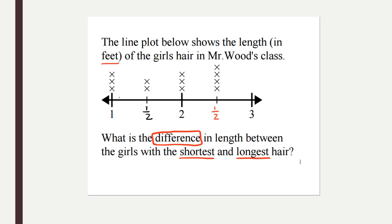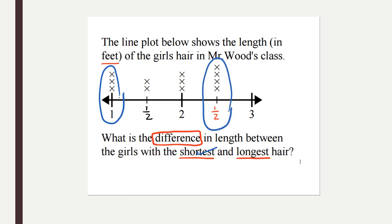I'm going to count my equal spaces in between whole numbers to find the fraction — I have one equal space and two equal spaces, so I'm working in halves. I'll label one half between each whole number. Looking for the shortest hair: the smallest number with an X is one, and this tells me there are three girls in Mr. Wood's class with hair that's one foot long. Now for the longest: the biggest number on my line plot is three, but there are no girls with three feet of hair. So the biggest number with X's is two and one half — remember, we only see one half but the whole number two goes with it. Reading these numbers: one, one and one half, two, two and one half, three.